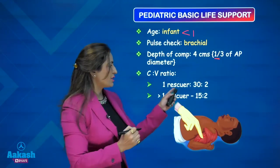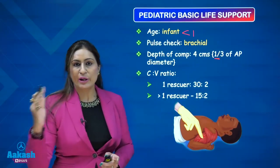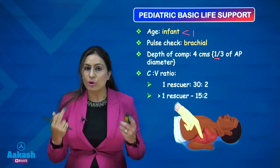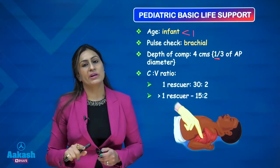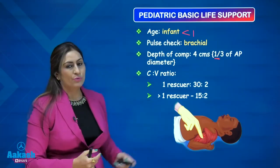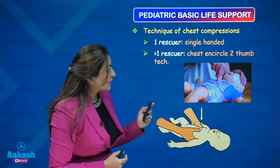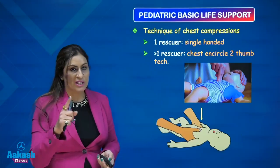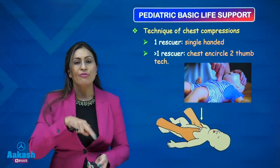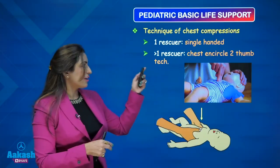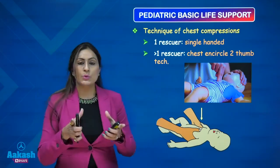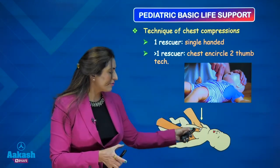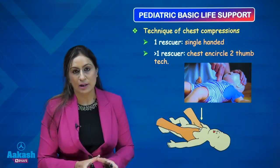If there is one rescuer, the compression-ventilation ratio remains 30:2. If there is more than one rescuer, the ratio changes to 15:2. The technique of chest compression also varies: with one rescuer, use the two-finger technique; with more than one rescuer, you can encircle the chest and give compressions with the thumbs.